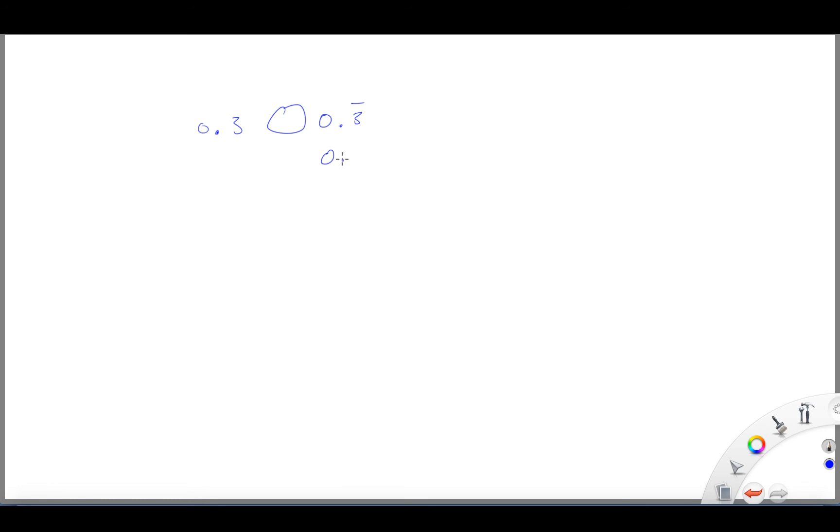Okay, so if we wrote this this way to give us just a visual, it would just be 3, 3, 3, repeating on and on and on. Well, this number is actually smaller than the 0.3, and it's not equal to the 0.3.